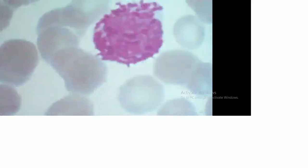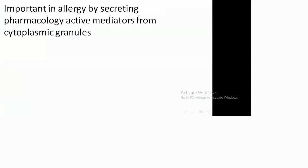Other types of immune cells include granulocytes: neutrophils, responsible for acute inflammation; eosinophils, responsible for parasitic infestation; and basophils, responsible for allergic responses. The last cell type is mast cells, which arise in the bone marrow and are important in allergy by secreting pharmacologically active mediators from cytoplasmic granules. Thank you.